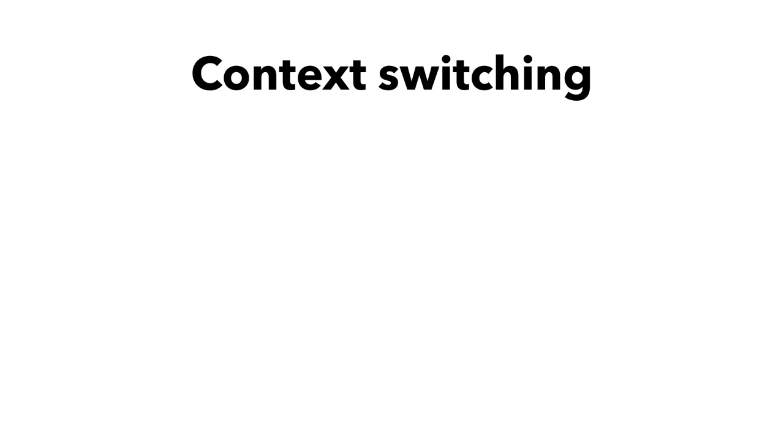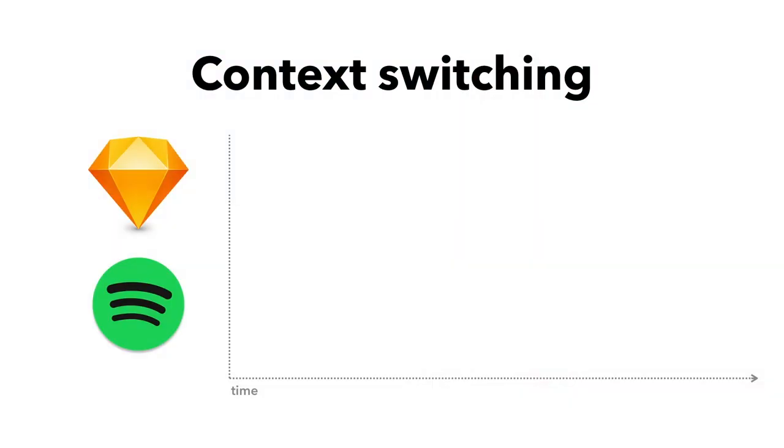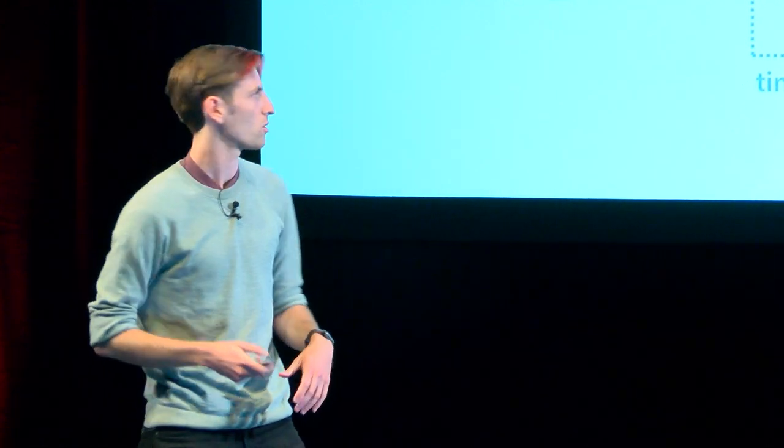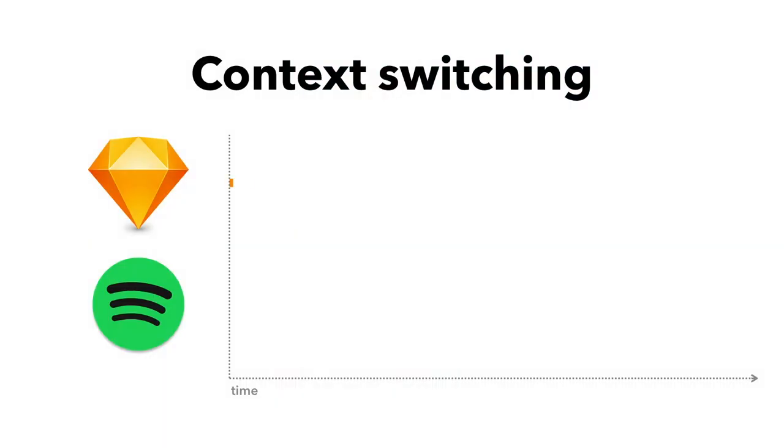A really technical example is context switching. Context switching is when a CPU wants to run multiple programs at once. So how many people run multiple programs at once? Yeah. Some of my favorite programs, maybe Sketch and Spotify, I want to run at the same time. Technically a processor, simply speaking, can only do one instruction at a time. So if you want to run both of these things at the same time and not have your Carly Rae, like, skip, you have to do something funny, which is called context switching, where the processor is just constantly jumping between two different things really fast, but we're too slow to really see the difference, and it works out.